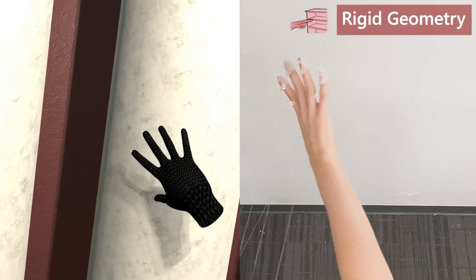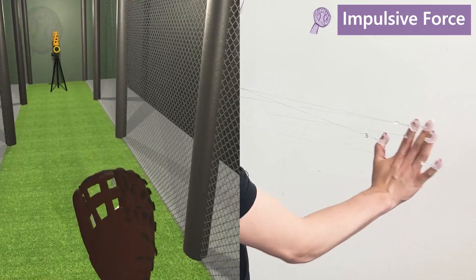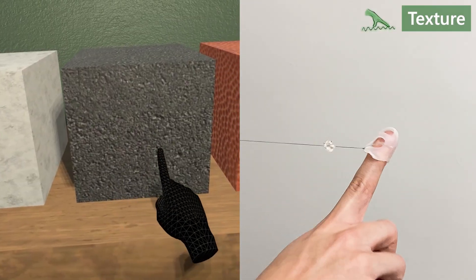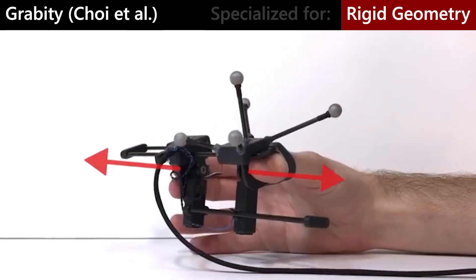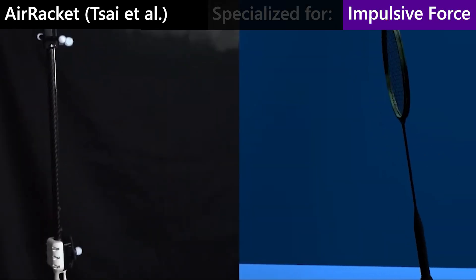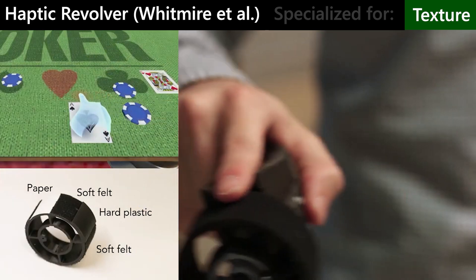This includes rigid geometry, haptic animations, impulsive force, compliance, and texture. This stands in contrast to many other haptic systems, which are typically special purpose, often targeting even just a single haptic effect, and cannot be easily combined with other systems.